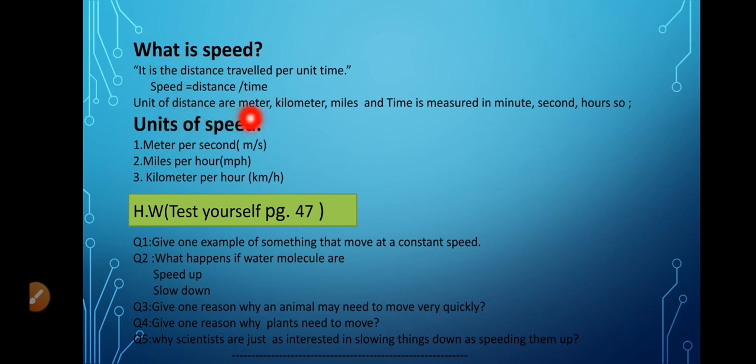The units of speed are meter, kilometer, miles and the time is measured in minutes, seconds and hours. So what will be the unit of speed? By substituting the unit of distance and time, we will get the unit of speed. Like if we substitute the distance unit of distance is meter and time in second, that will be meter per second. How to read? Meter per second, M divided by S. Similarly, if we substitute the unit of distance, kilometer and the time in hours, we will get the unit of speed that will be kilometer per hour. So these are the commonly used units of speed.